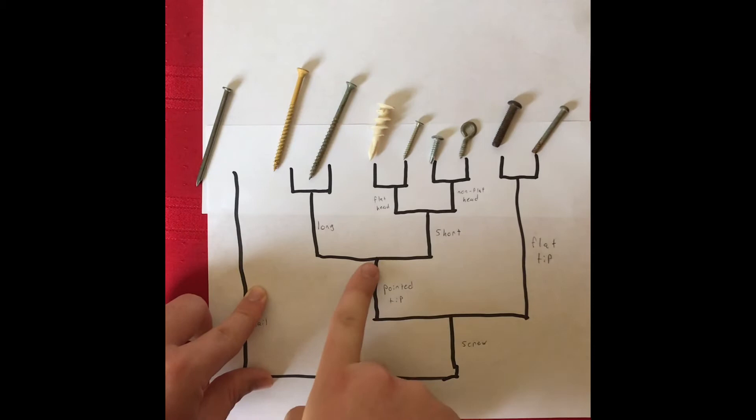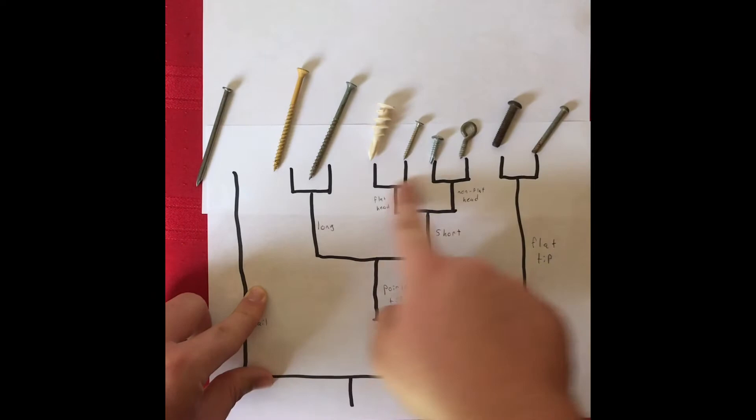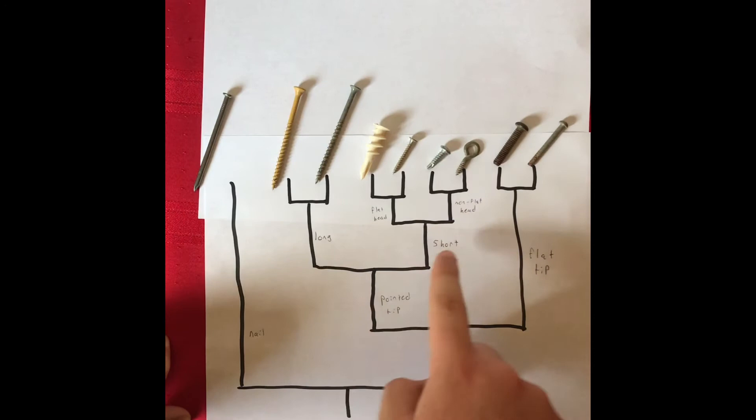All six of these screws had their most recent common ancestor here at this node. The most recent common ancestor had to have had a pointed tip since all six of these also have a pointed tip.